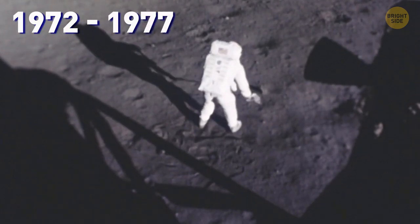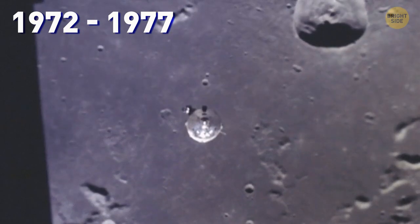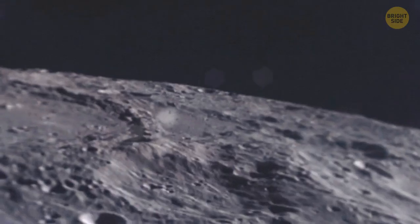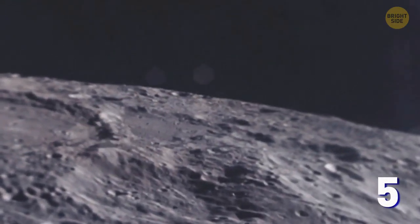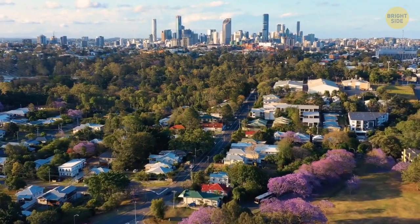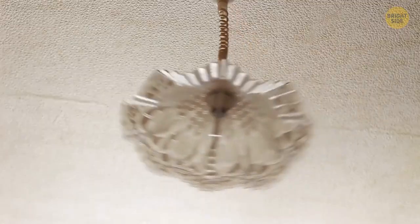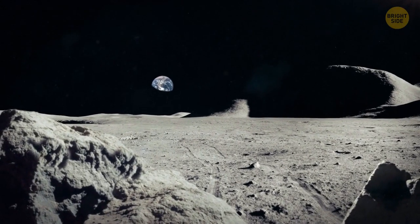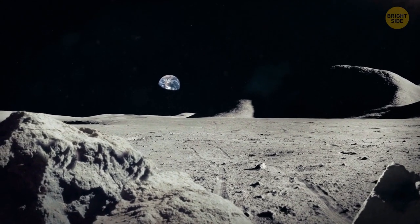Between 1972 and 1977, the Apollo seismic network recorded 28 such moonquakes, and some of them measured more than 5 on the Richter scale. On Earth, such an earthquake is strong enough to crack plaster and move heavy furniture. Plus, shallow moonquakes are very long-lasting and compared to earthquakes.